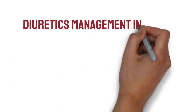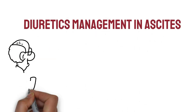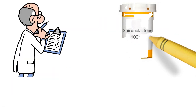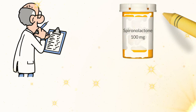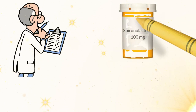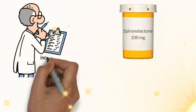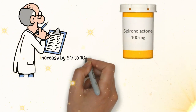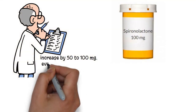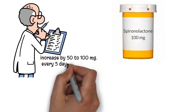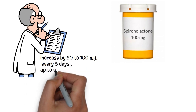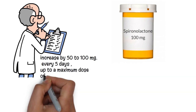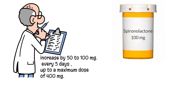Diuretics management in ascites. The means of choice is spironolactone, with an initial dose of 100 mg. The dose is increased by 50 to 100 mg every 5 days, up to a maximum dose of 400 mg.